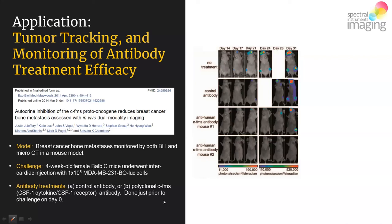They evaluated three different treatment paradigms: no treatment, control antibody, and the specific polyclonal antibody against the CSF1 cytokine receptor complex. In the no-treatment group out to day 31, there is very nice progression of bone metastatic lesion formation after intracardiac challenge of the breast tumor cell line at 100,000 cells — a standard way of initiating the metastatic lesion phenomenon of primary breast tumor cells.